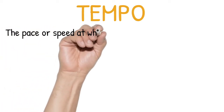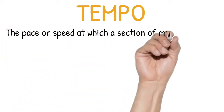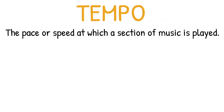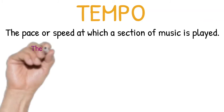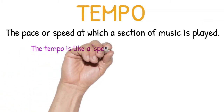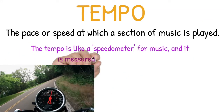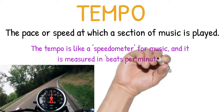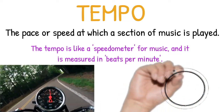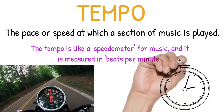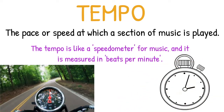Tempo can be defined as the pace or speed at which a section of music is played. Tempos help the composer to convey a feeling of either intensity or relaxation. We can think of the tempo as a speedometer of the music. Typically, the speed of the music is measured in beats per minute, or BPM.